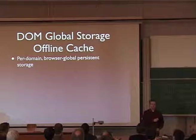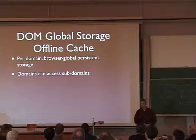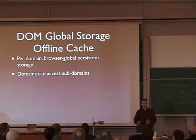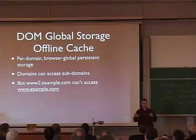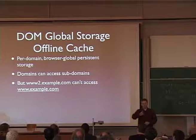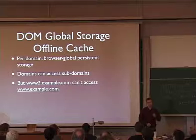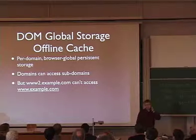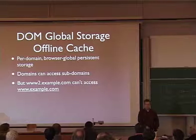This is one of the basic building blocks of building these web-based applications. Security is obviously an important issue — you want sites to be able to securely store data there. Domains can access sub-domains and vice versa, so you can build tiered sites that share data across them. But we don't allow cross-domain sharing — www2.example can't hit www.other-example.com. All of this is specified in the WhatWG working group's specifications. Much of it is implemented in Firefox 2, and we hope other browsers will continue to implement — we'll finish the implementation in Firefox 3.